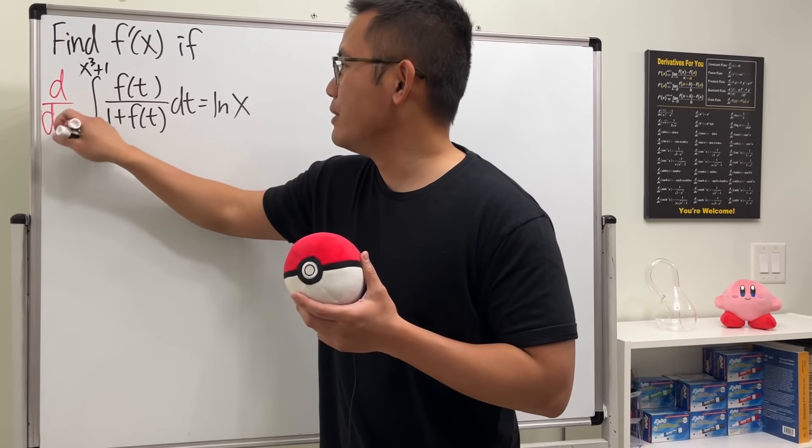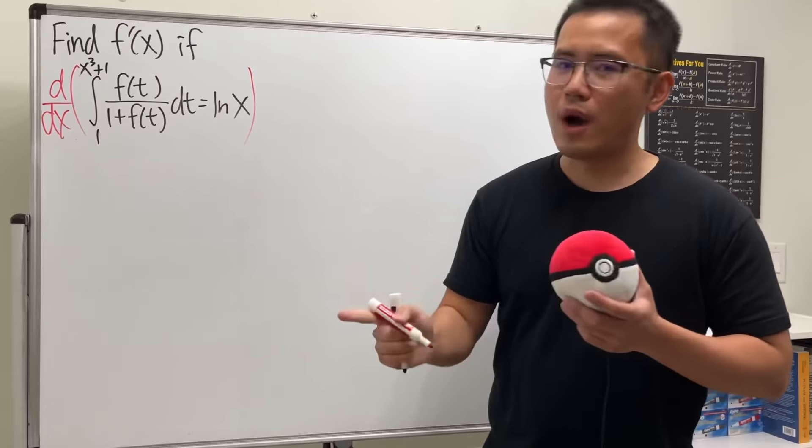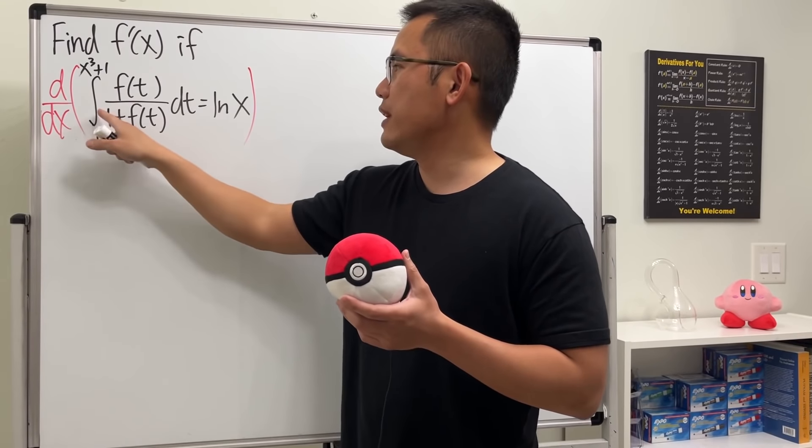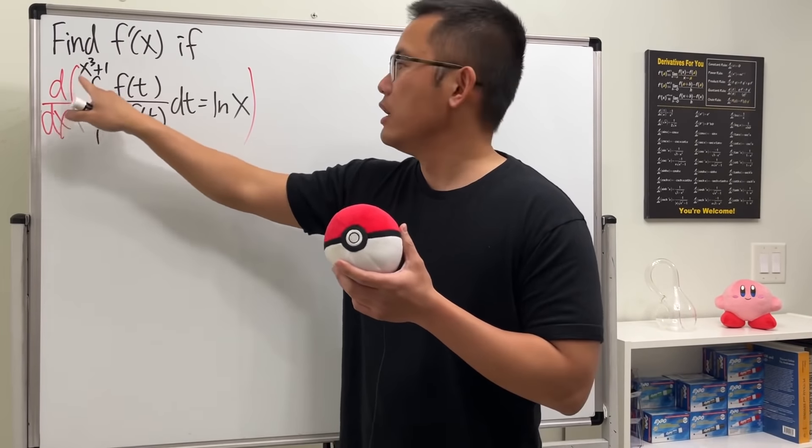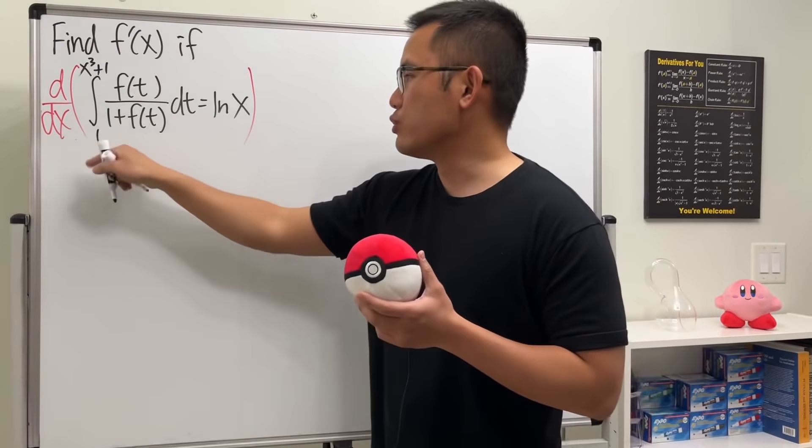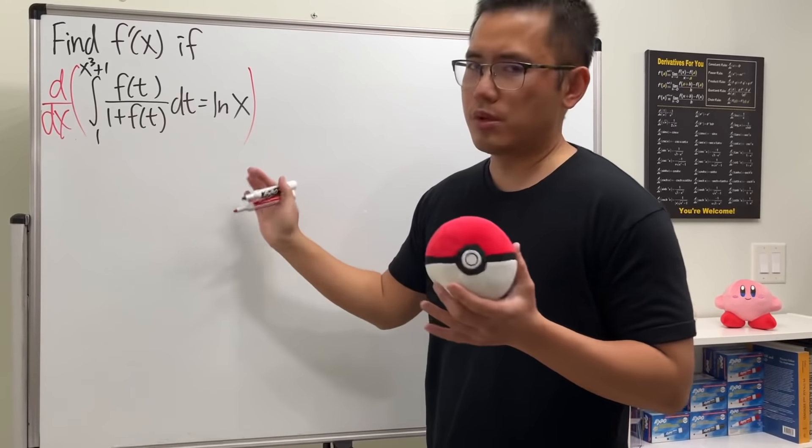And this step is called the Fundamental Theorem of Calculus, Part 1. Pretty much it says we can just cancel the derivative and integral. But the way to do it is, you put this instead of the t here and t here, and then use the chain rule. And then don't worry about the one, don't worry about the second part.